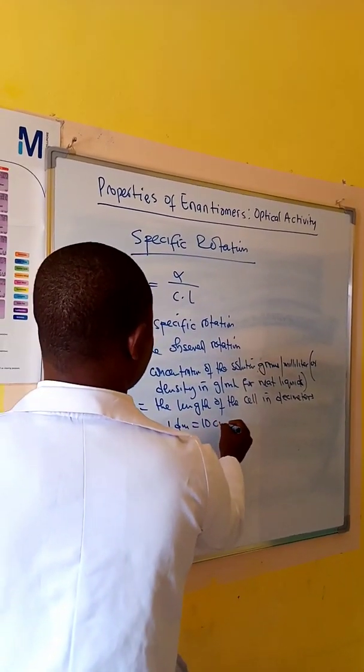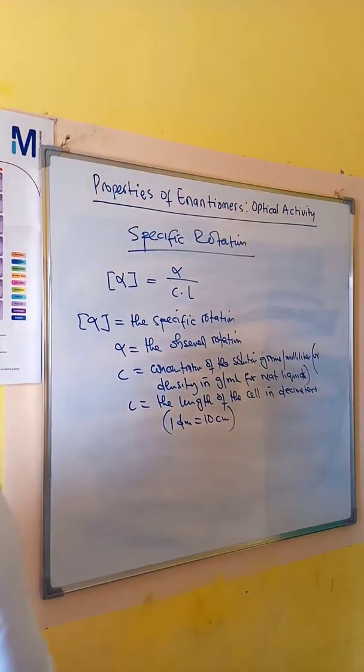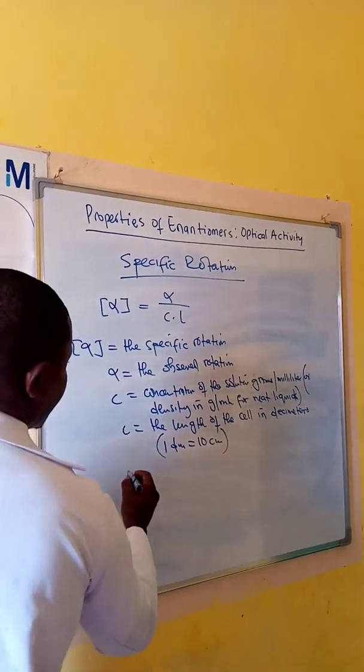One decimeter is equal to ten centimeters. This is the formula that we may use to calculate specific rotation.